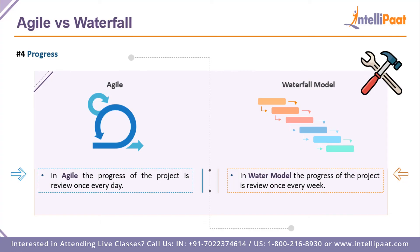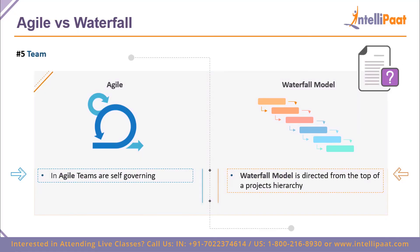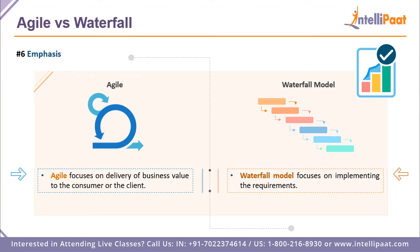On progress: in agile, you review progress every other day, whereas with waterfall, progress is checked every other week — because in agile it's a shorter development life cycle so you need to check daily, while waterfall can run for two, three, or six months so weekly checks suffice. On team governance: in agile, teams are self-governing, whereas in waterfall all teams are governed by a single authority, making agile teams more independent. On emphasis: in agile the focus is on delivering the end product, increasing business profit and value, and ensuring customer satisfaction. Whereas in waterfall, the whole emphasis is on implementing the end goal — you know your requirements and you implement them.